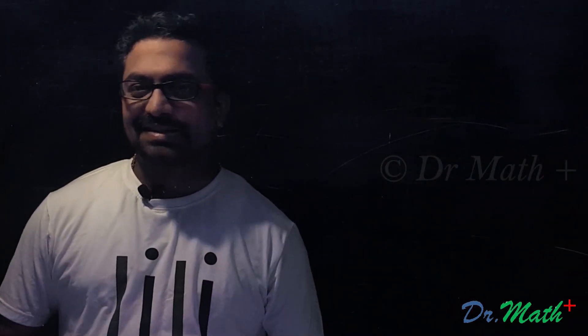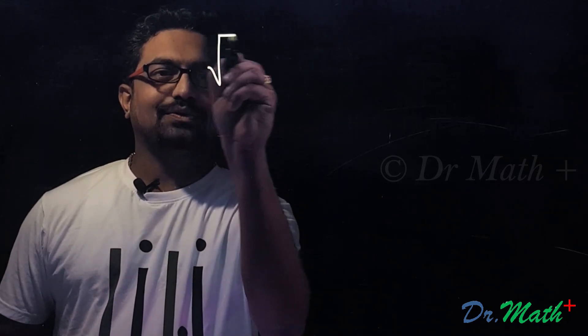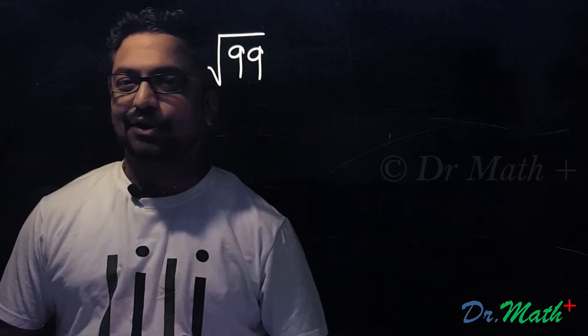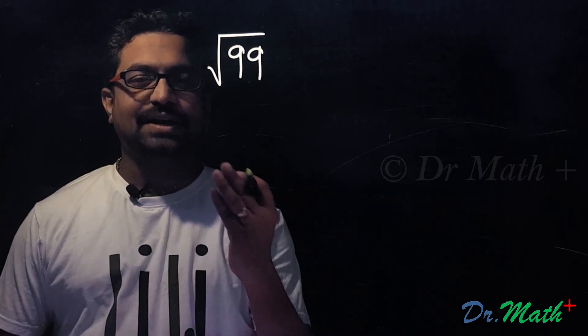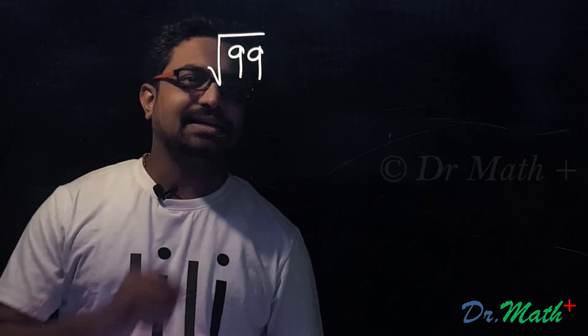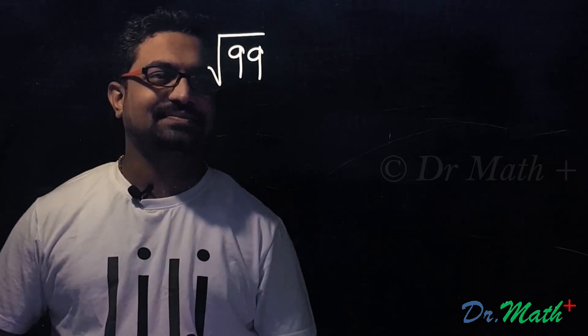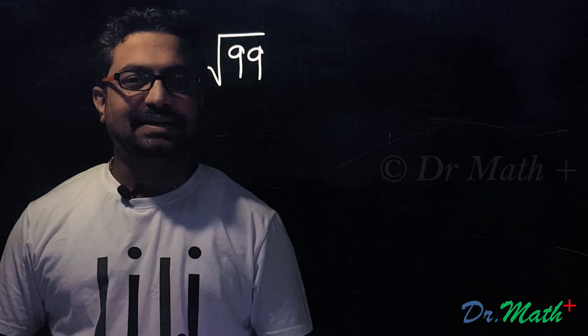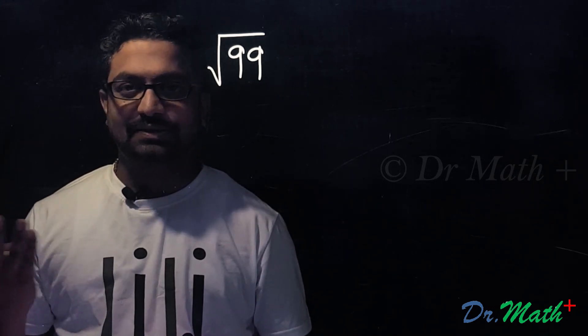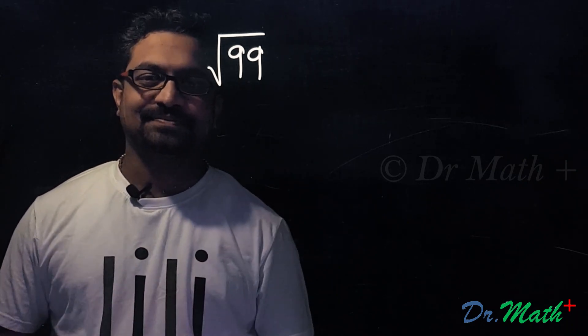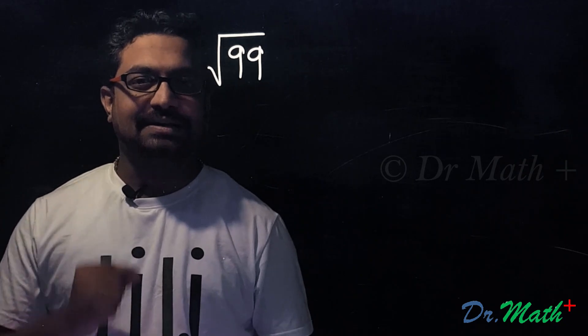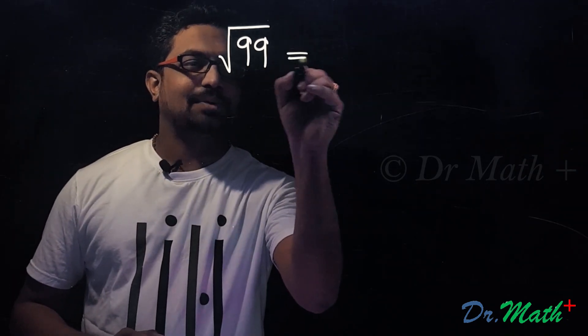Let me take another example. Say we have to find the square root of 99. 99 is a non-perfect square and we are trying to find out the square root of 99, but 99 is very close to 100. So square root of 99 must be a little less than square root of 100, and we all know that square root of 100 is 10. So square root of 99 must be a little less than 10. Let's find out how much is that.